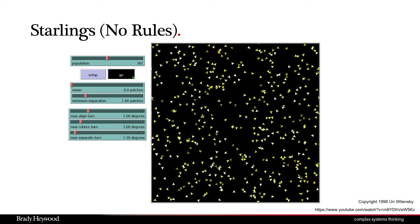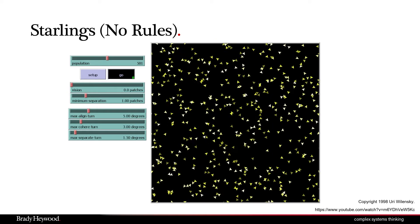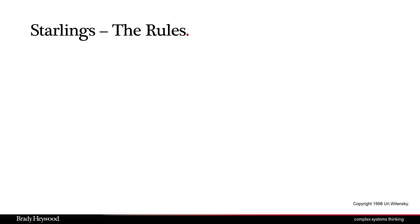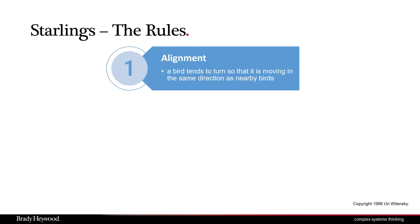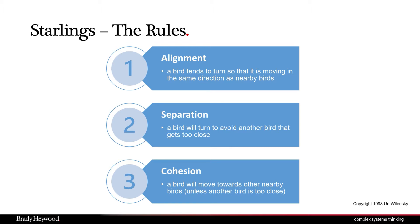We're looking at a wrapped sky here — when they fly out on the left they fly back in on the right. What we can do is set a set of rules for these starlings, as done by a scientist named Reynolds. He decided they would only have three rules. The first is alignment: a bird tends to turn so it's moving in the same direction as nearby birds. The second is separation: if they're going to get too close, they'll avoid each other. The third is cohesion: a bird will move towards other nearby birds unless another bird is too close. Three simple rules.